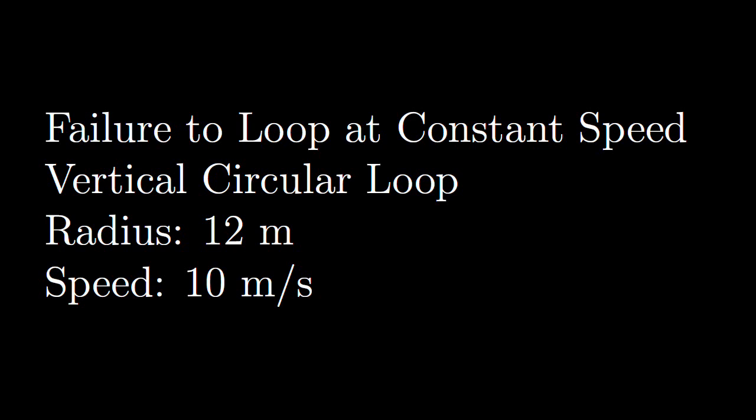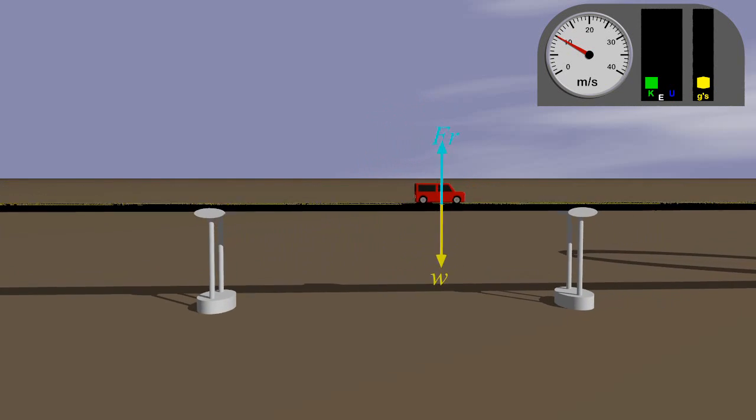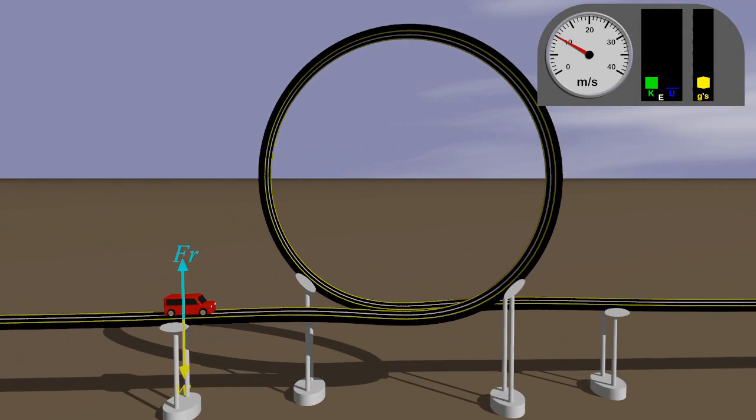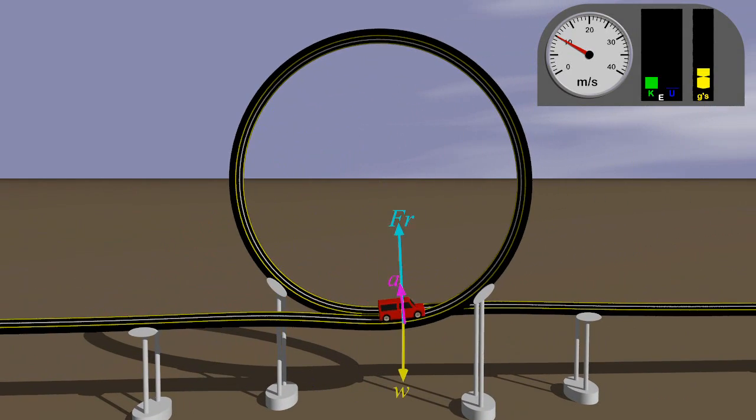There is a minimum speed required to successfully traverse a circular loop as depicted. Below this minimum speed, the tires would have to be pulled by the track as the car approaches the top of the loop, which is impossible.